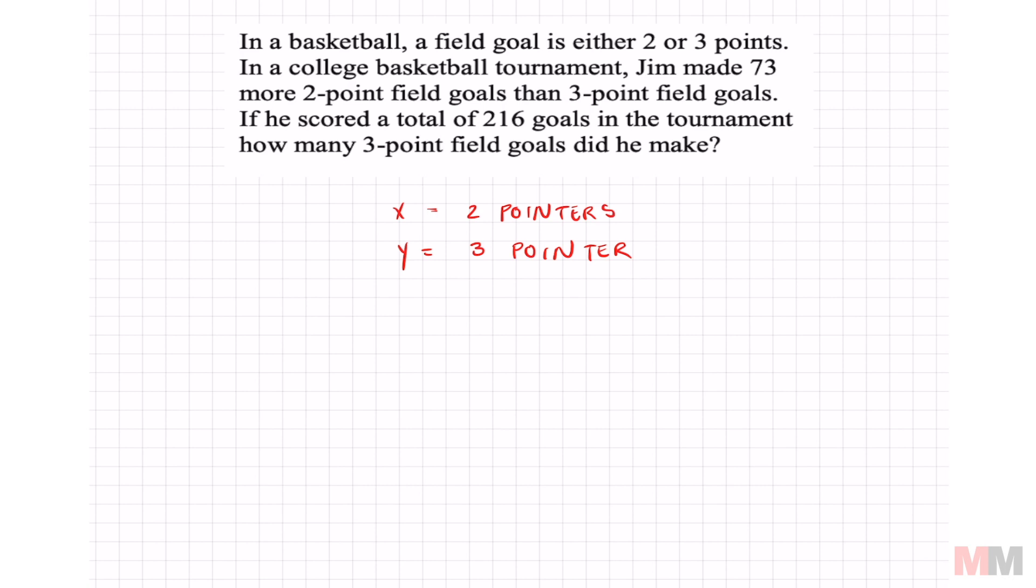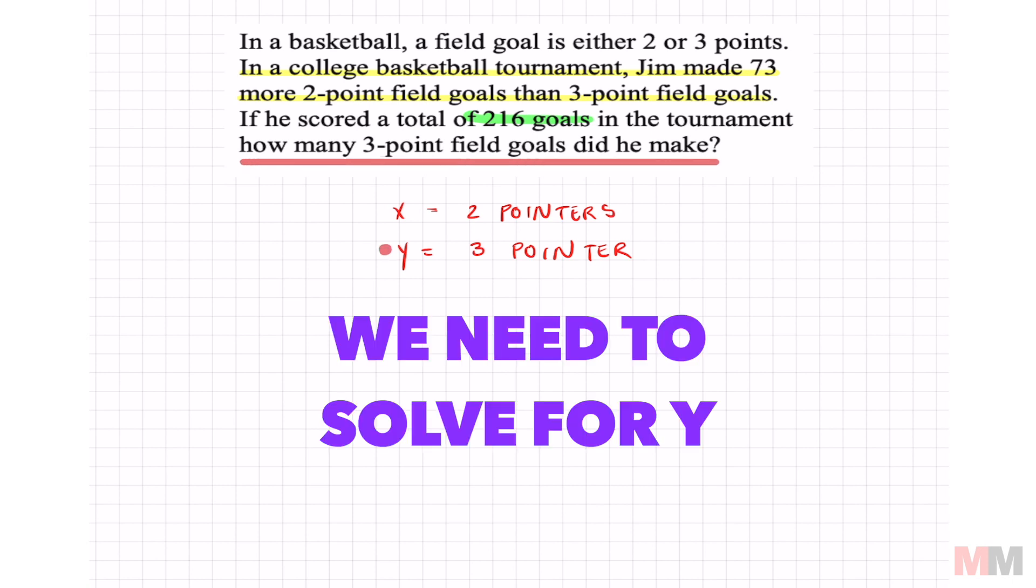In a college basketball tournament, Jim made 73 more two-point field goals than three-point field goals. So we got one important information right here that all go together. I'm going to highlight that in yellow. Second part is if he scored a total of 216 goals in the tournament, how many three-point field goals will he make? So this information is the second part. We're going to write the equation for the yellow and the green. And the question is in the red. We're trying to figure out how many three-point field goals he made, which is solving for y.